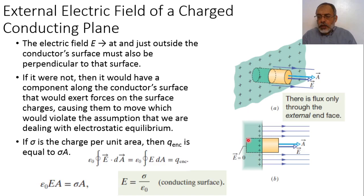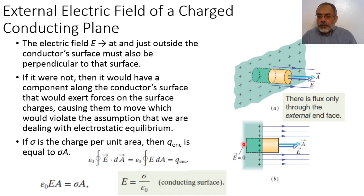To find the total flux passing through this closed surface, we integrate E dot dA over the closed surface, which divides into E dot A1 plus E dot A2 plus E dot A3. E dot A1 equals the magnitude of the electric field multiplied by the surface area A. E dot A2 is zero because E is zero inside the conductor. E dot A3 is zero because the normal to A3 is perpendicular to the direction of the electric field.